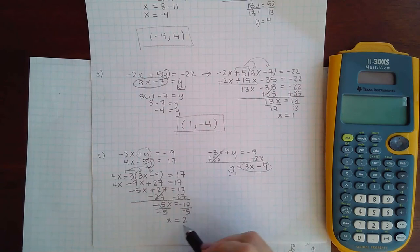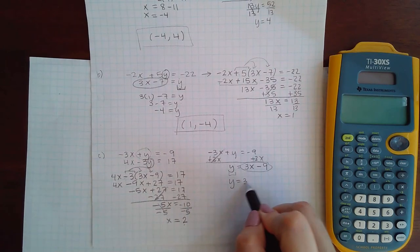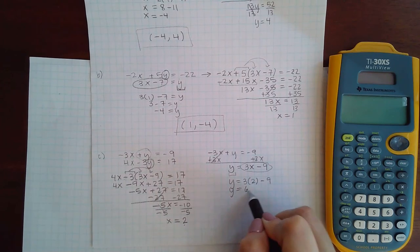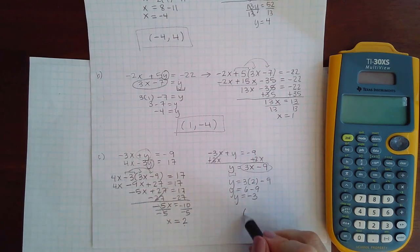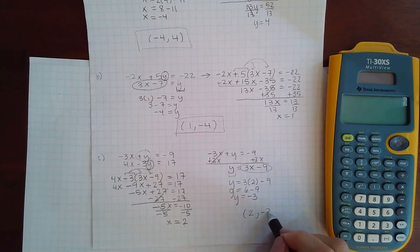And so I have the x coordinate. Now I just need to go back to that expression for y to figure out what the y coordinate is. So y in this case equals negative 3. So what is the point? The point is the x coordinate comma the y coordinate.